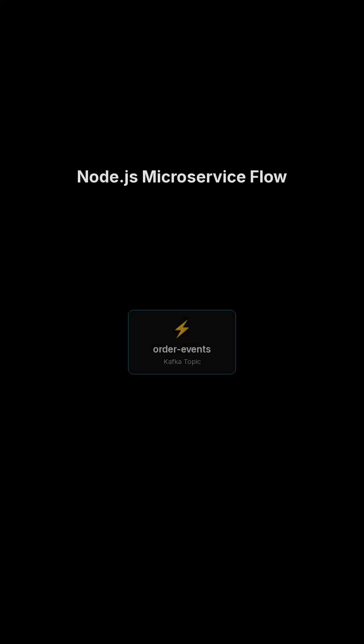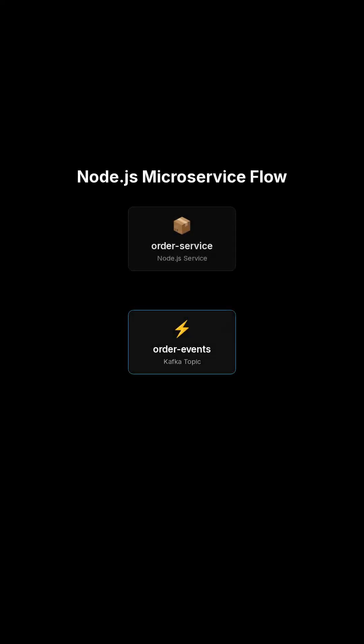This is where Kafka shines with Node.js microservices. An order service emits order_created. A payment service consumes it and charges the customer. An email service also consumes it and sends a confirmation mail. None of them call each other directly — they all just listen to events.